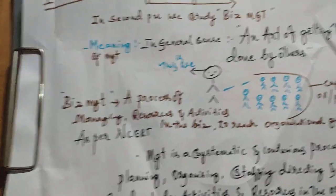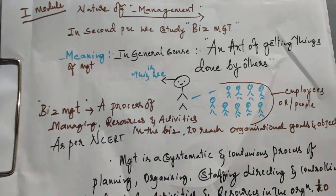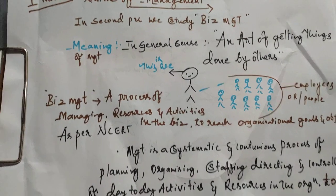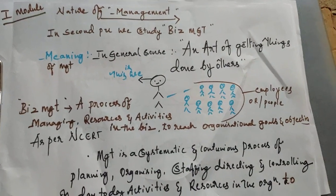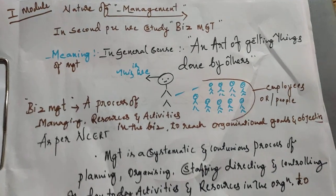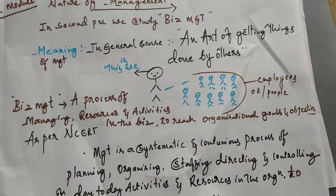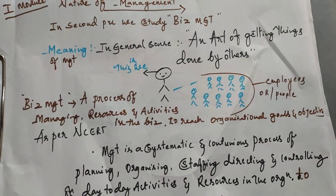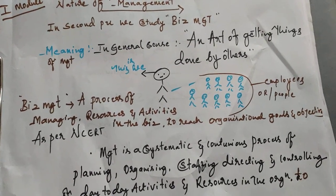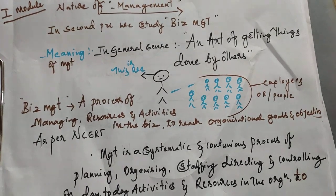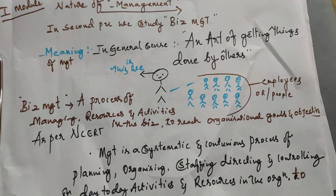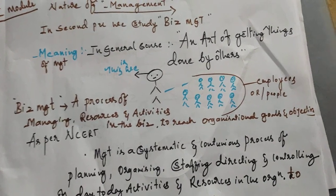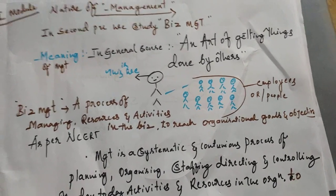Let us come to the topic business management. Business management means a process of managing resources and activities in the business to reach organizational goals and objectives. It is a continuous process. Managing means handling resources — the main inputs of the organization such as man, material, machinery, equipment, and technology.